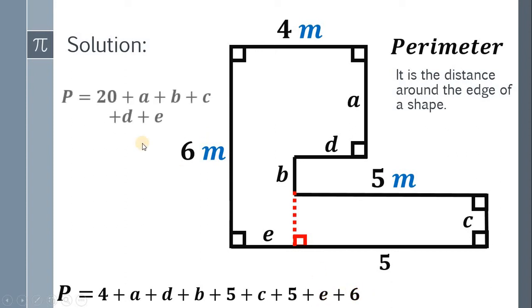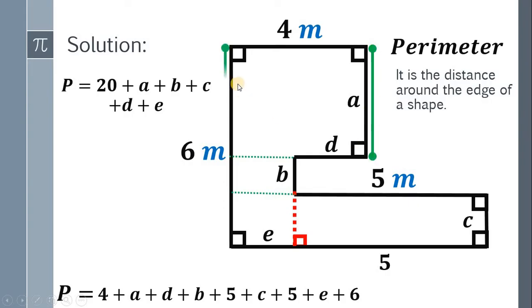Now, rearrange and we get the perimeter of this figure must be equal to 20, plus A, plus B, plus C, plus D, plus E. At this point, draw some horizontal lines like this. Notice that this side length is A, and this side length is also A. This length is B, and in the opposite side, we also have the length B. This side measures C, and the opposite side is also C. Therefore, the side A, plus B, plus C, is simply equal to 6 meters. Therefore, this A, plus B, plus C is simply 6.